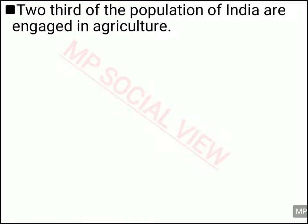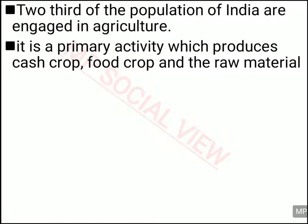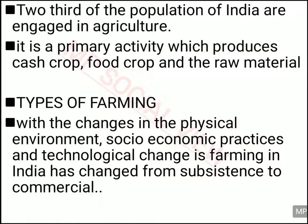As you know, more than half of our population is engaged in agriculture, and agriculture produces many things like cash crops, food crops, beverages and raw material for the industry. The type of farming is changing in our country as our physical environment changed, socio-economic practices changed, and many technological innovations took place. We are actually shifting from the subsistence type of agriculture to the commercial type of agriculture.